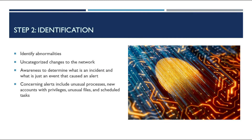Step two is identification. This is the step where you try to identify any abnormalities or unrecognized changes within the network. This step relies heavily on awareness and the ability to identify whether something is an incident or not. This is done by looking at log files and other alerts from an IDS and firewalls. Something that could turn into an incident could be someone calling to report that their computer is acting oddly. Things that might set off alarms include unusual processes, new accounts with privileges, unusual files, and scheduled tasks that are outside of the norm.